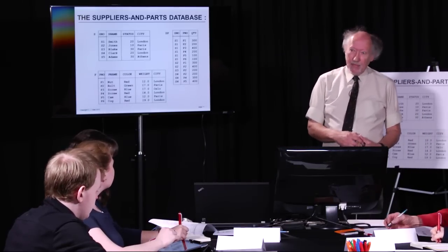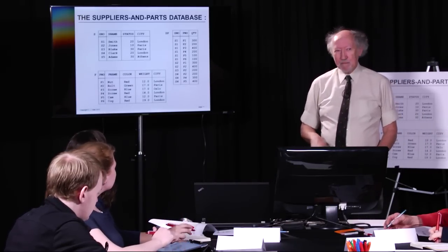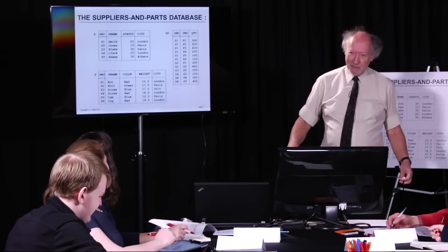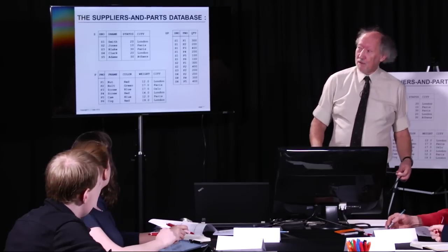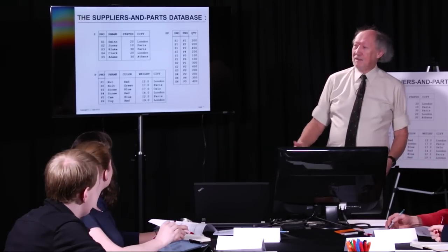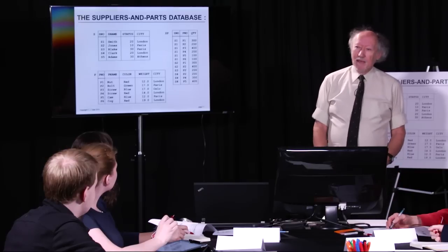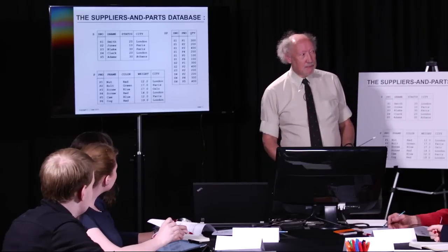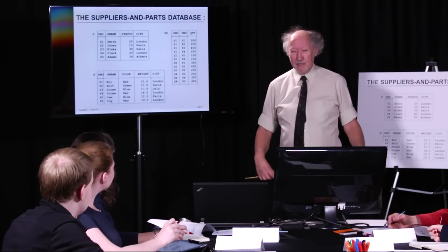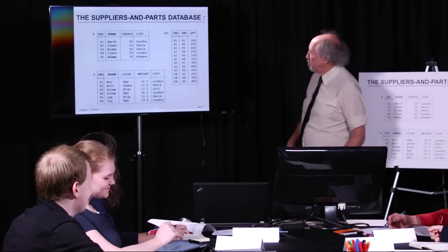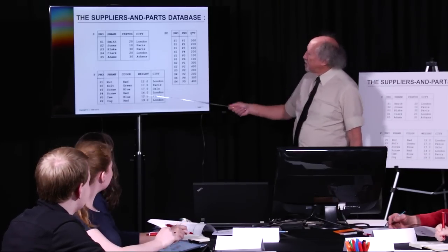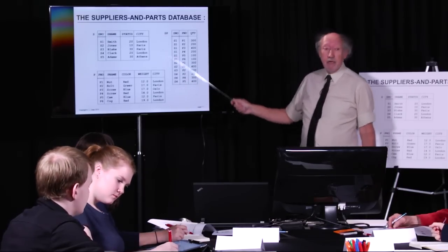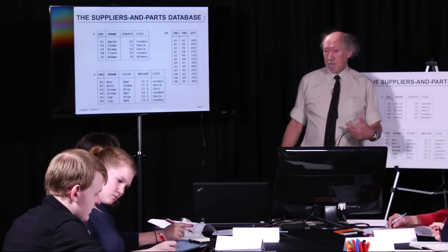We're going to use a running example. Anyone who knows me would be very surprised to see a seminar from me that did not talk about the Suppliers and Parts database. There are only three databases in the world: departments and employees, courses and students, and suppliers and parts. This is the Suppliers and Parts database. As you can see, it contains three tables or files: S which is Suppliers, P which is Parts, and SP which you think of as shipments of parts by suppliers.